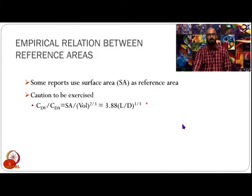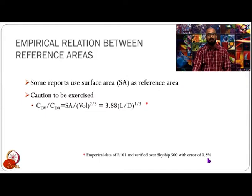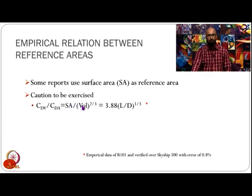This empirical relation converts the volumetric drag coefficient to the area-based drag coefficient. It was based on the R101 airship and has also been verified on the Skyship 500, with an error percentage of about 0.8%. In this equation, Vol is the volume, Sa is the surface area, and L/D is the fineness ratio — the length of the airship divided by the maximum diameter of the envelope.